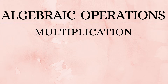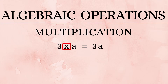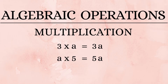Now we move on to multiplication. '3 into a' is written as '3a' in algebra. The multiplication sign is almost never used and is always implied, so '3a' is understood as '3 into a.' Similarly, 'a into 5' is written as '5a.' Note that the numerical part always comes before the variable.